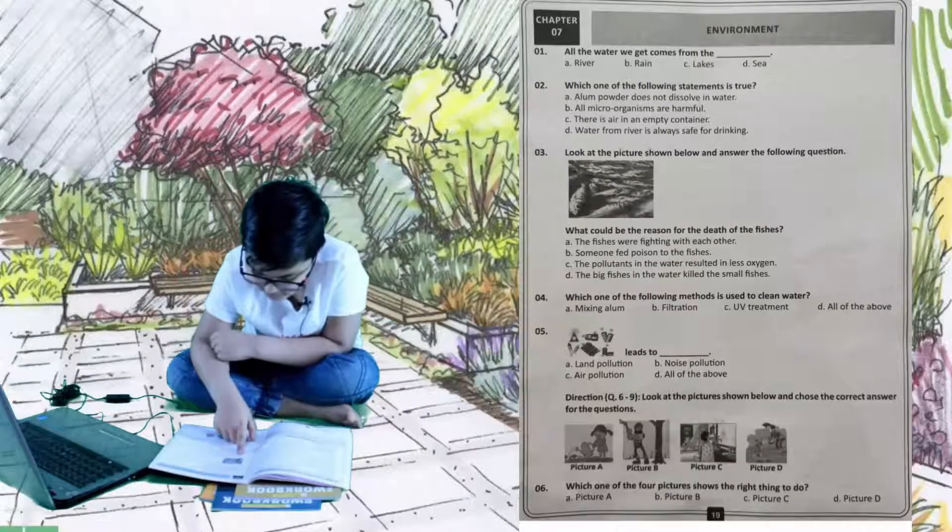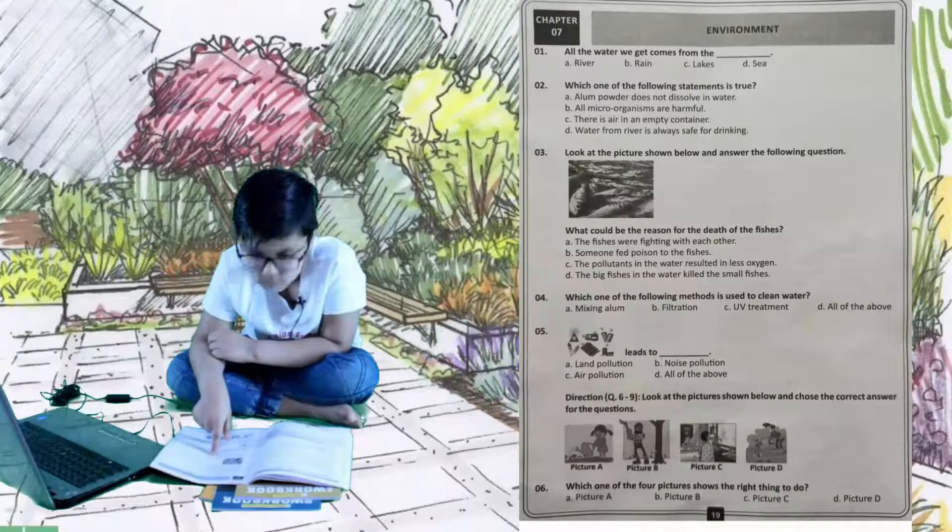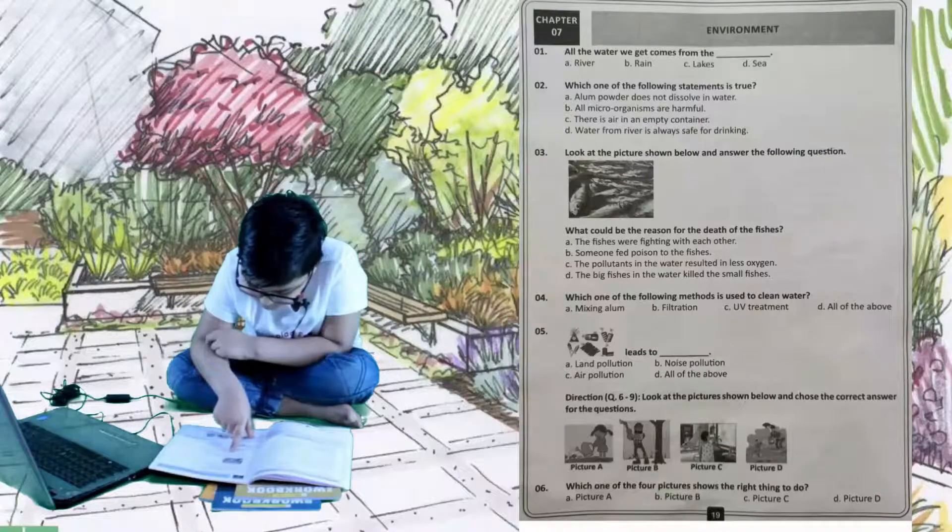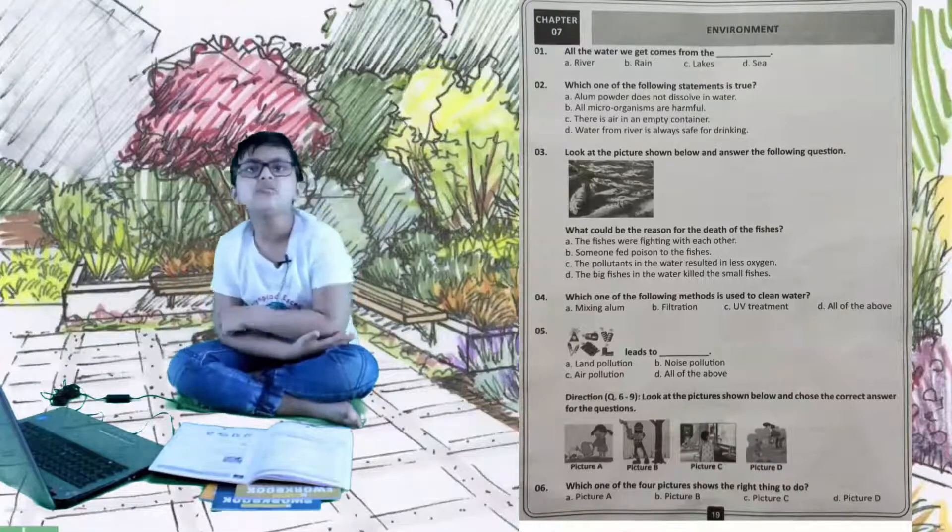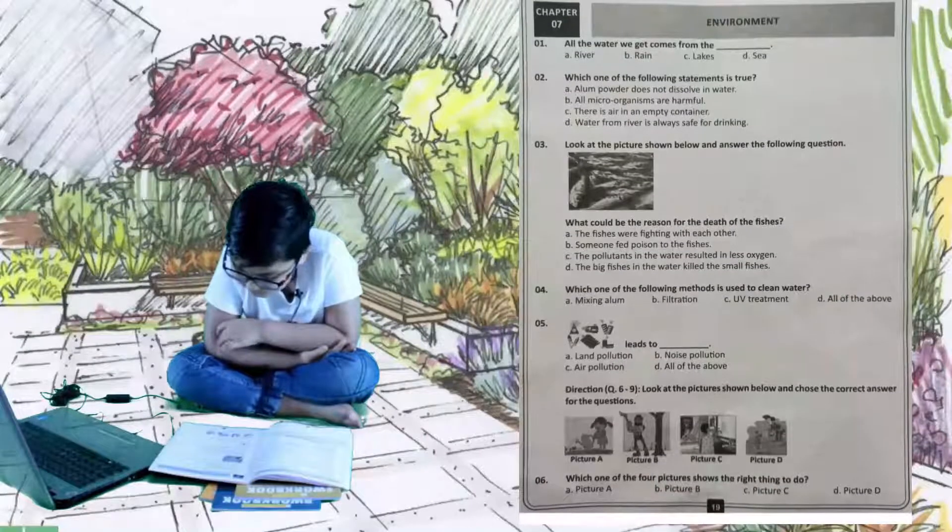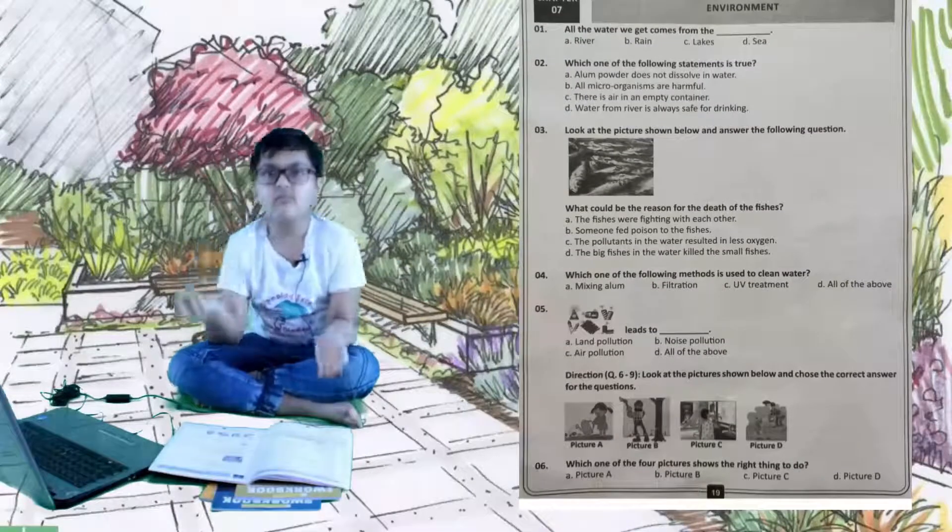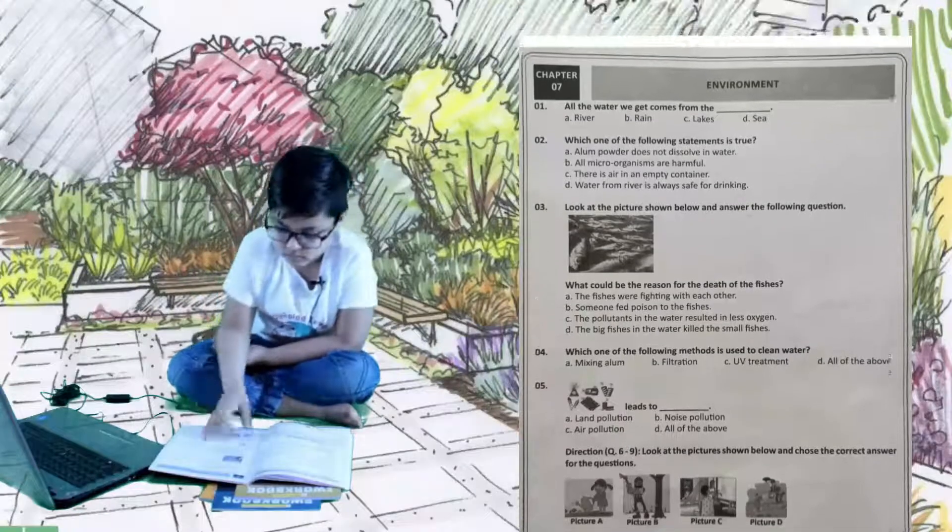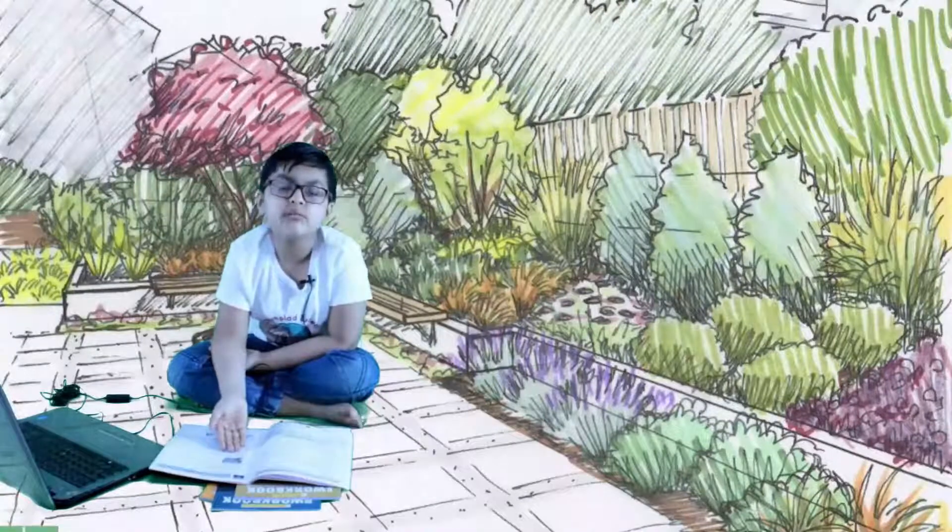Options: A, the fishes were fighting with each other, nope. B, someone fed poison to these fishes, how dare he. C, the polluted water resulted in less oxygen, this is more realistic. D, the big fishes in the water killed the small fishes, this is not true because if they killed them they would be in their stomach. The right answer is C because no one will feed them poison, and fighting, they never fight most times.